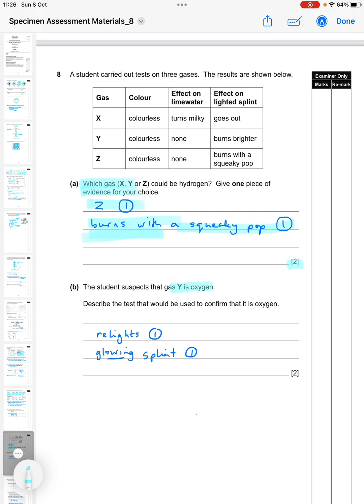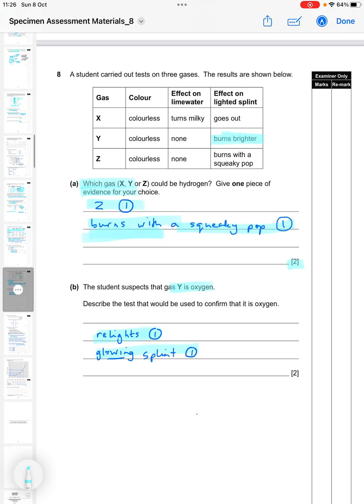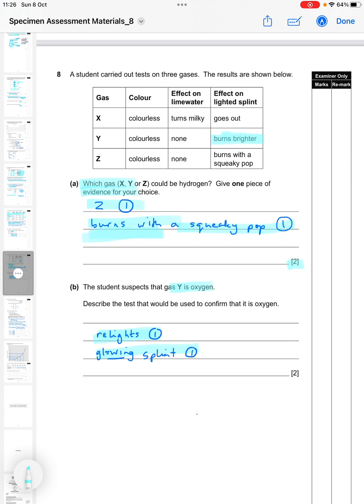The student suspects that gas Y is oxygen. Describe the test that would be used to confirm that it's oxygen. In here they've just said it burns brighter. The test for oxygen as you know is it relights a glowing splint. One mark for each of those parts of the answer.